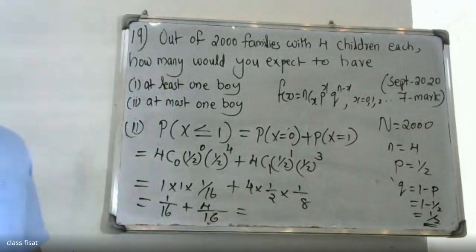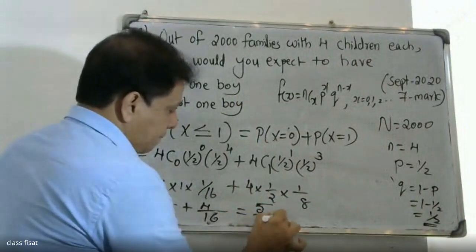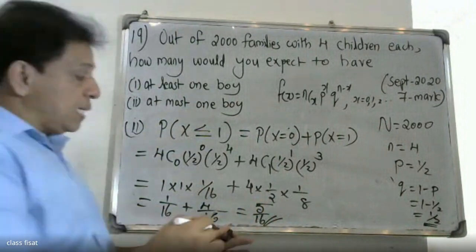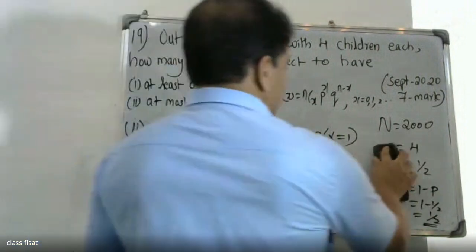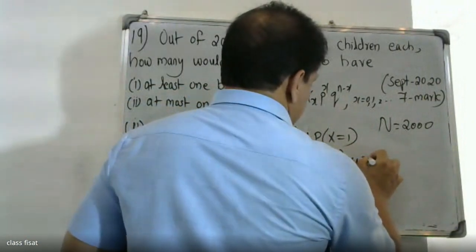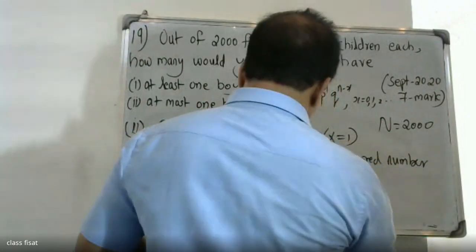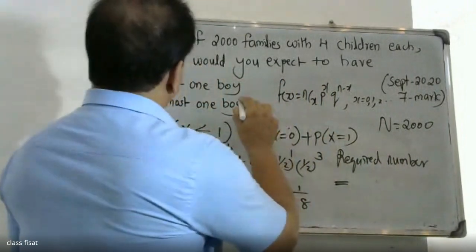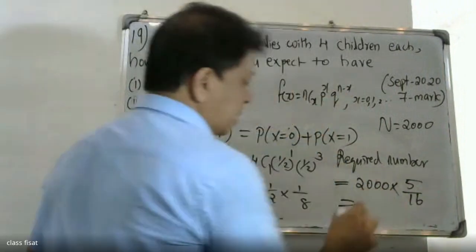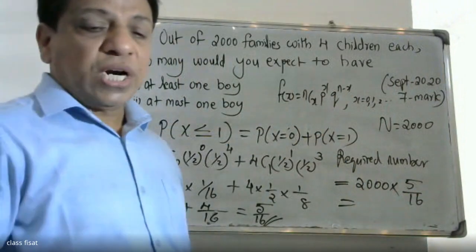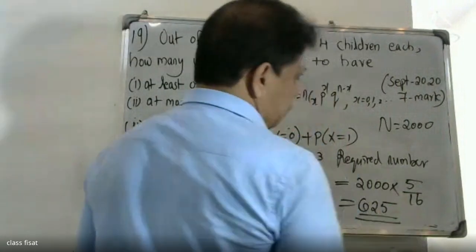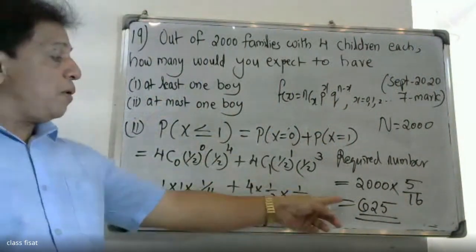The result is 5/16. The expected number of families with at most one boy is 2,000 × 5/16, giving a final answer of 625.